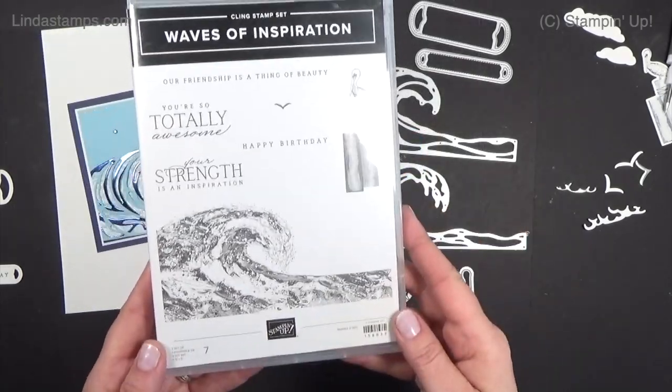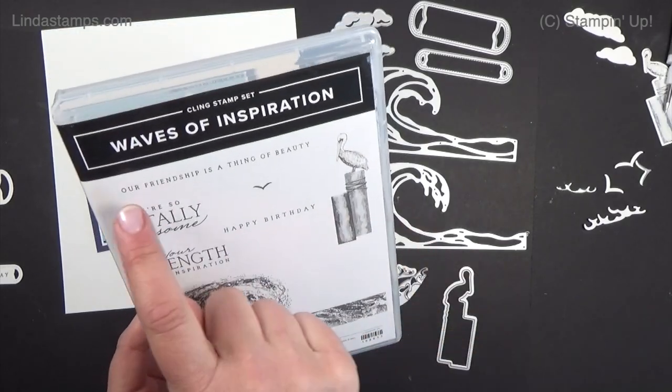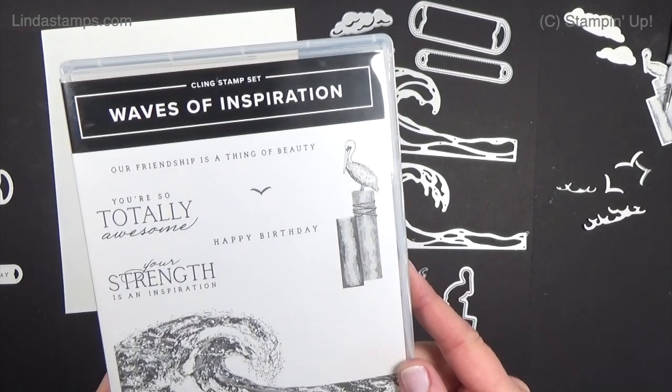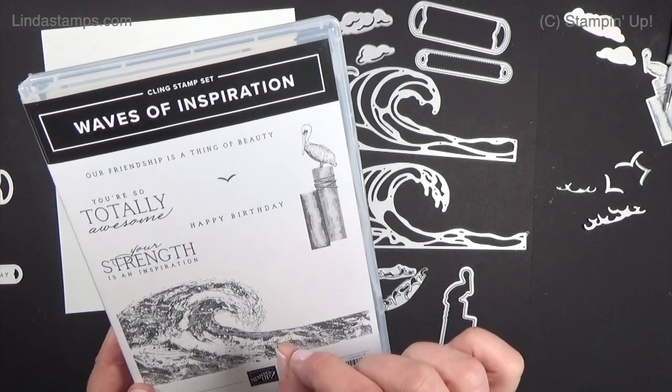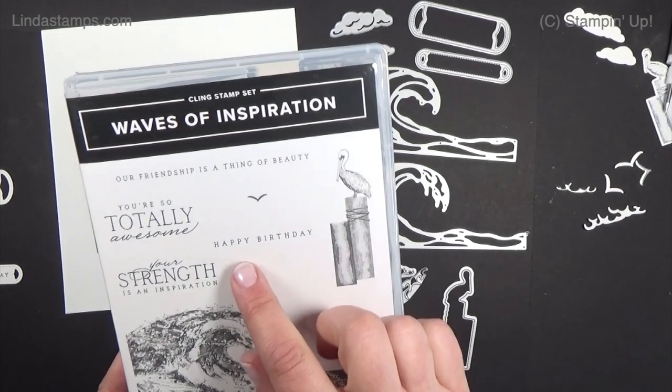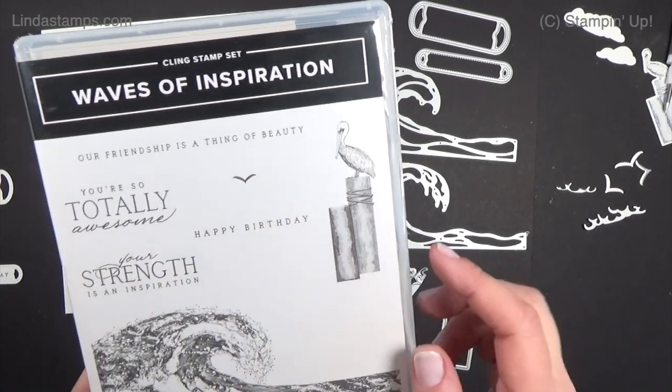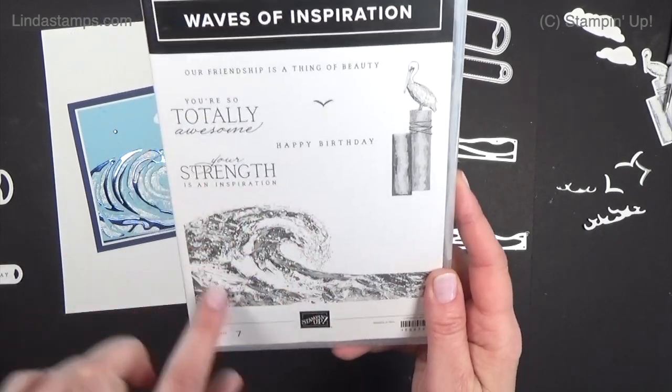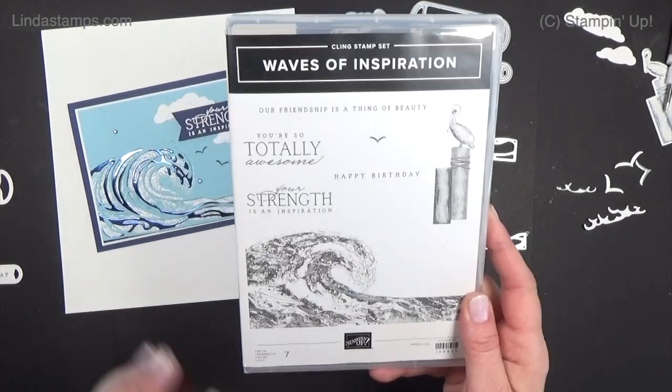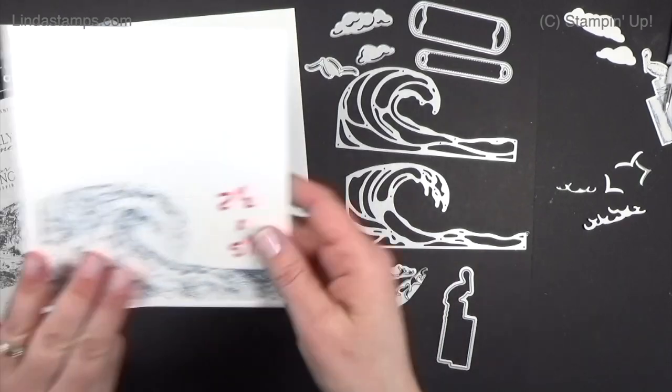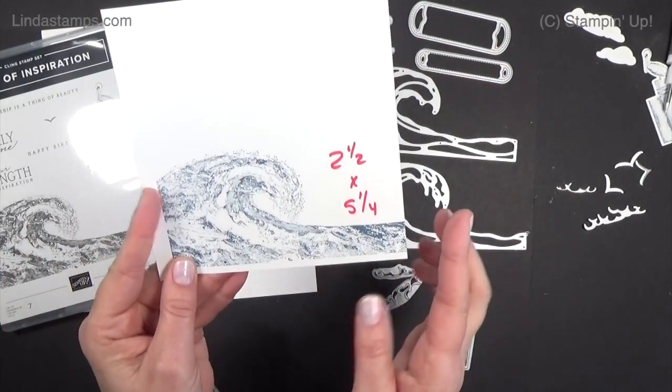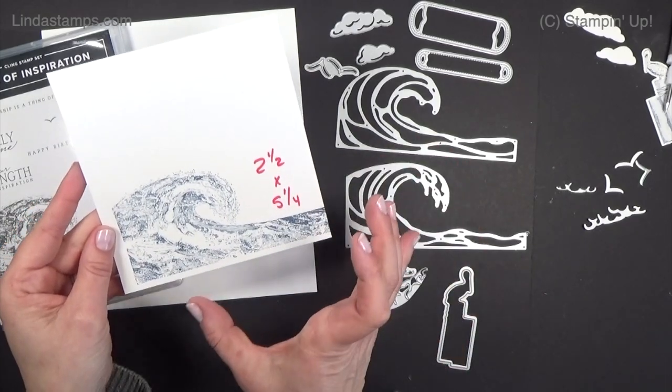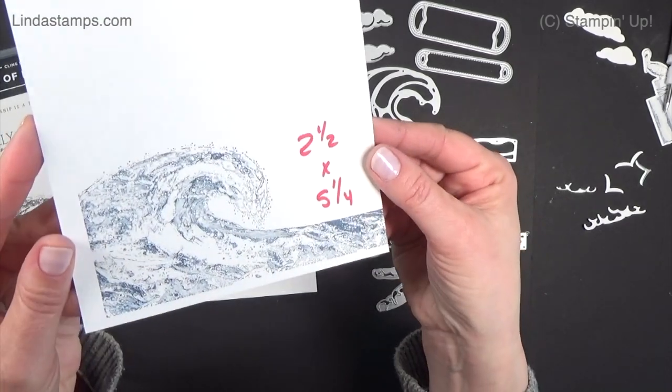Here's the bundle. Here's the stamp set. These little sentiments: 'our friendship is a thing of beauty' and 'happy birthday.' They're very tiny. I had a hard time stamping with those, but if you use your Stamparatus you'll get it perfect every time. 'You're so totally awesome,' 'your strength is an inspiration.' Then this big stamp. This is large. It's two and a half tall by five and a quarter, so it fits nicely on a layer.